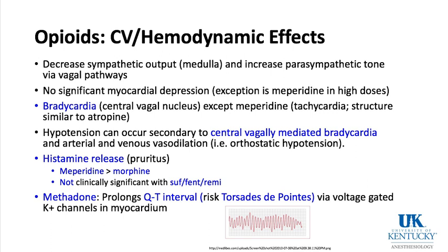Hypotension with opioids can occur secondary to centrally vagally-mediated bradycardia and arterial and venous vasodilation. Some patients given opioids in low doses for postoperative pain can have orthostatic hypotension if they get up rapidly. Demerol and morphine are the bad actors with regard to histamine release. We don't see clinically significant histamine release with sufentanil, fentanyl, or remifentanil. Redness along a vein where morphine was administered is histamine release — not an allergic reaction.